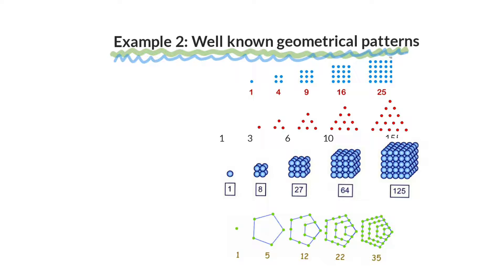Example two looks at well-known geometrical patterns. The first one we see is the pattern one, four, nine, sixteen, twenty-five — represented with dots forming little squares. This is called the square pattern. The second one shows triangles: one, three, six, ten, fifteen — this is the triangular pattern.